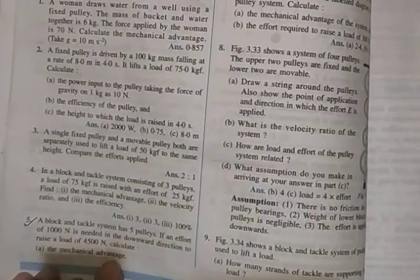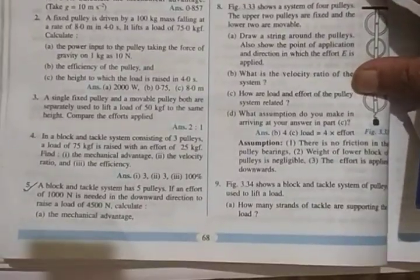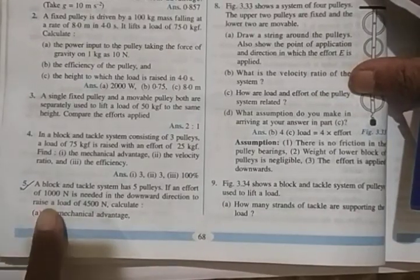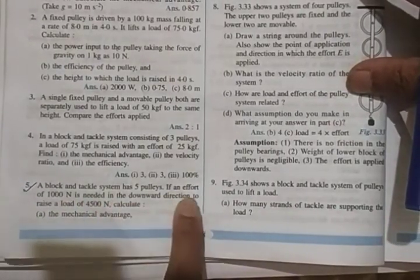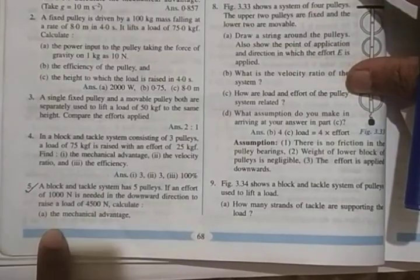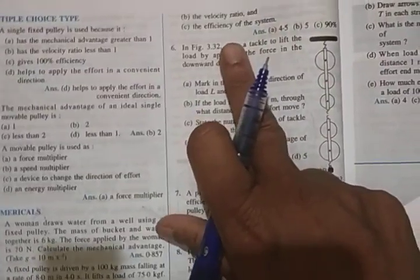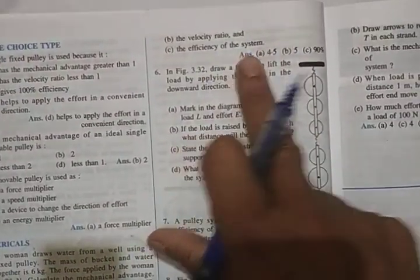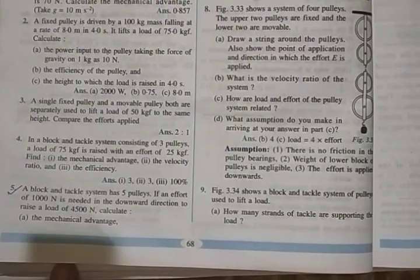A block and tackle system has five pulleys. If an effort of 1000 Newton is needed in the downward direction to raise a load of 4500 Newton, calculate mechanical advantage, velocity ratio and efficiency of the system. So let's write what is given.